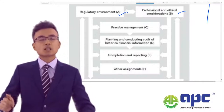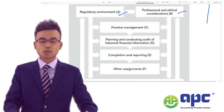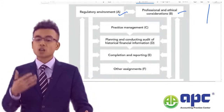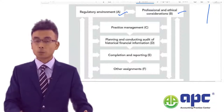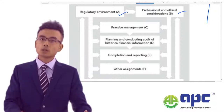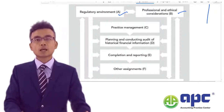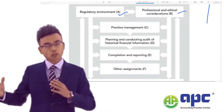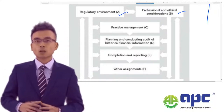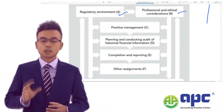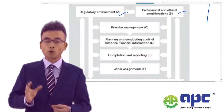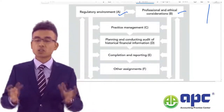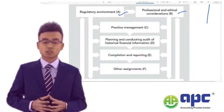In the AAA exam, there should be a question asking you about Part B of the syllabus. From my experience, and according to the marking scheme, normally there will be one mark per point related to Part B, which is the ethical considerations.